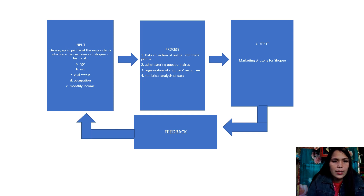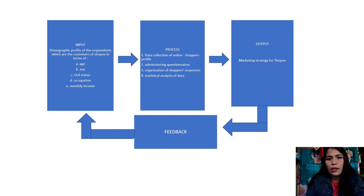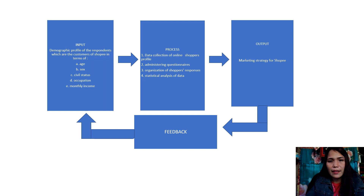The conceptual framework includes the variables of the study. In the first part, the input is the demographic profile of the respondents — customers of Shopee — in terms of age, sex, civil status, occupation, and monthly income. The second part is the process: data collection of online shoppers' profile, administering questionnaires, organization of shoppers' responses, and statistical analysis of data. The last part is the output — a marketing strategy for Shopee — followed by feedback.